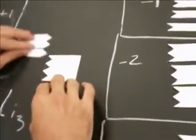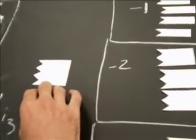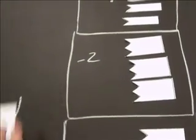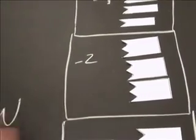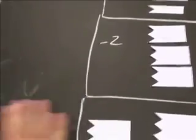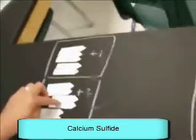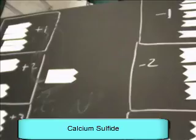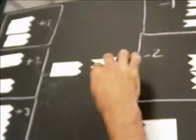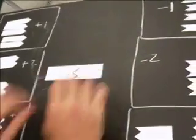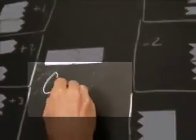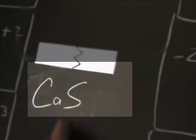Let's do calcium sulfide. Calcium is a plus two because it's in the second column. Sulfide is a minus two — it's in the oxygen column. So, calcium and sulfide — I'm going to stick them together. They fit together! I have one calcium and one sulfide. So it's CaS. Well, that was simple.